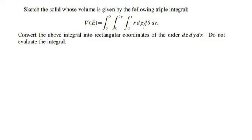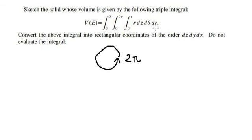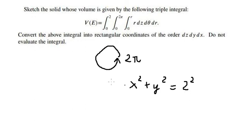If we look carefully about d theta and dr, we see that they start from 0 to 2π. That means they will go around the full circle to 2π. This one is about the radius. So we know x squared plus y squared equals 2 squared, because the radius of the circle is 2. Now we have r.